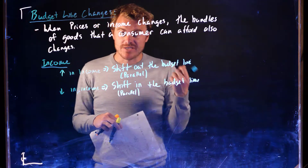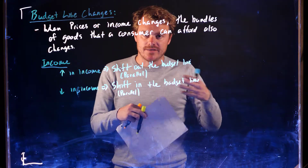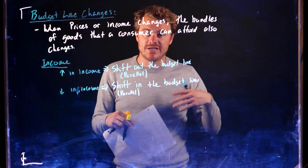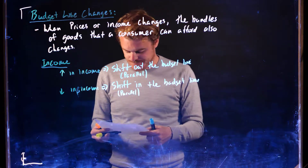Conversely, a decrease in income is going to cause a parallel shift in of the budget constraint, and what this is doing is decreasing the different combinations of goods that we can afford.